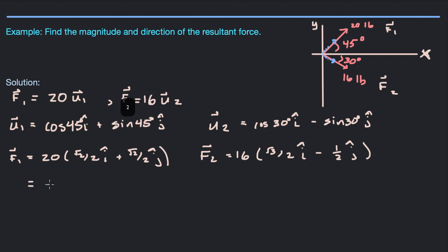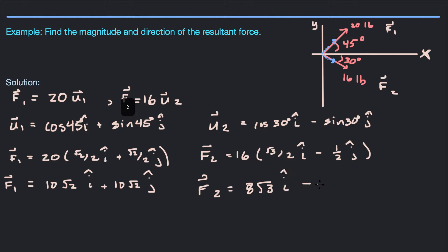Multiplying these out, we get F1 = 10√2 î + 10√2 ĵ. That is the component form of this force whose magnitude is 20 and angle is 45. The F2 vector, multiplying that out, gives us 8√3 î − 8 ĵ. Now the resultant force is the addition of these two forces. So the resultant force FR — force sub R — is going to be the F1 vector plus the F2 vector.